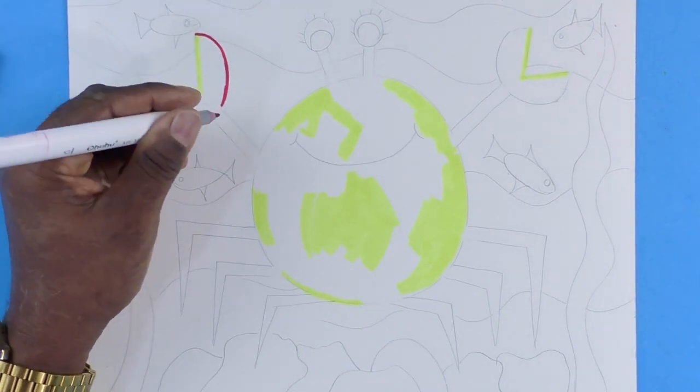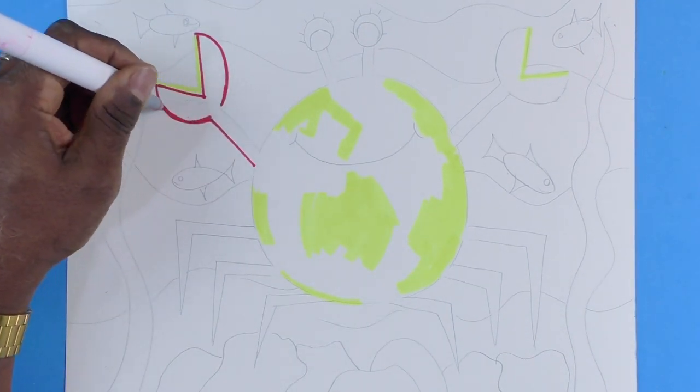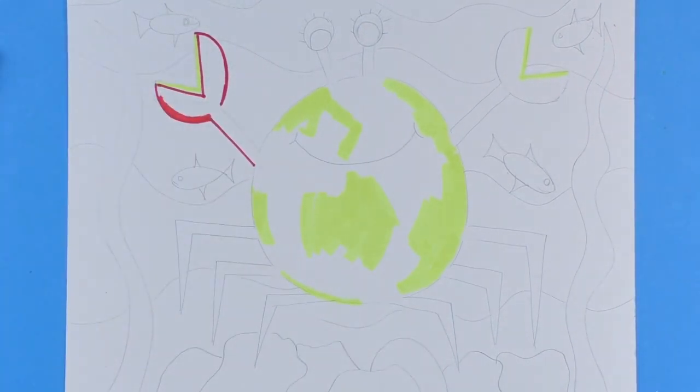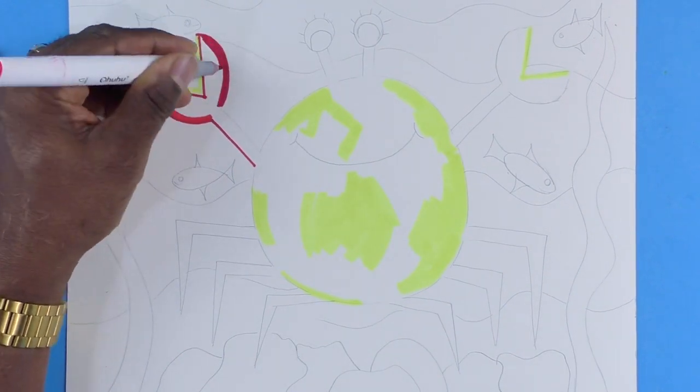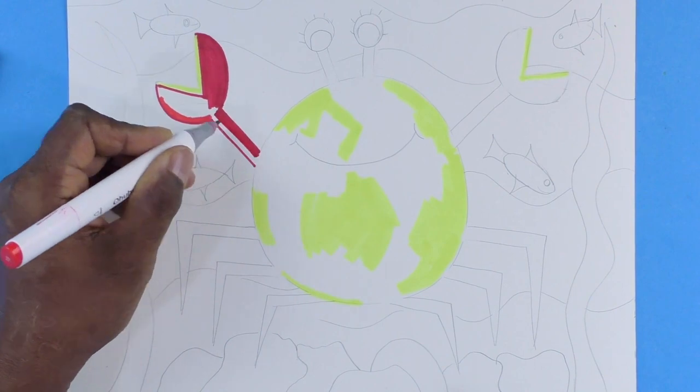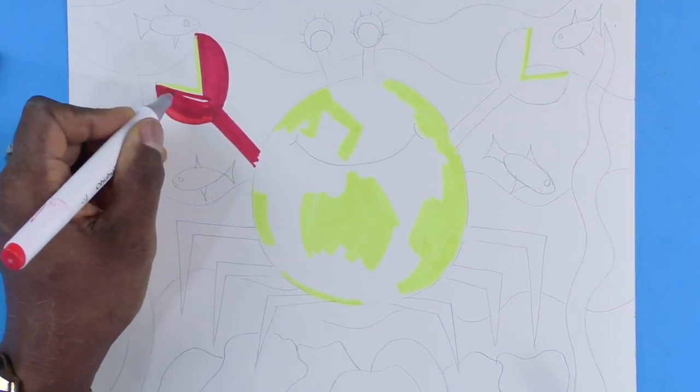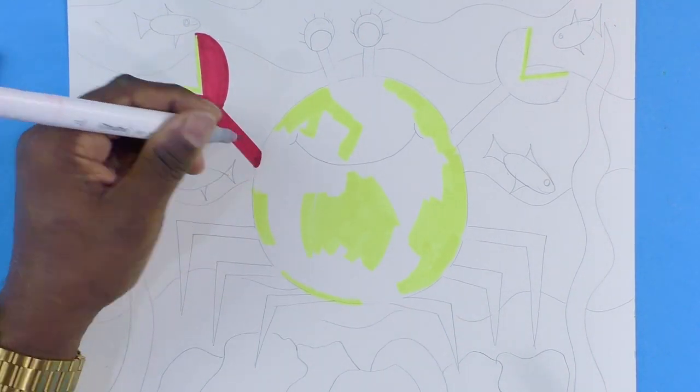Because I'm going to put some reds and some oranges over top of that yellow. But by having that yellow, it will make my reds and oranges much brighter. And it will just give them a much enriched color.